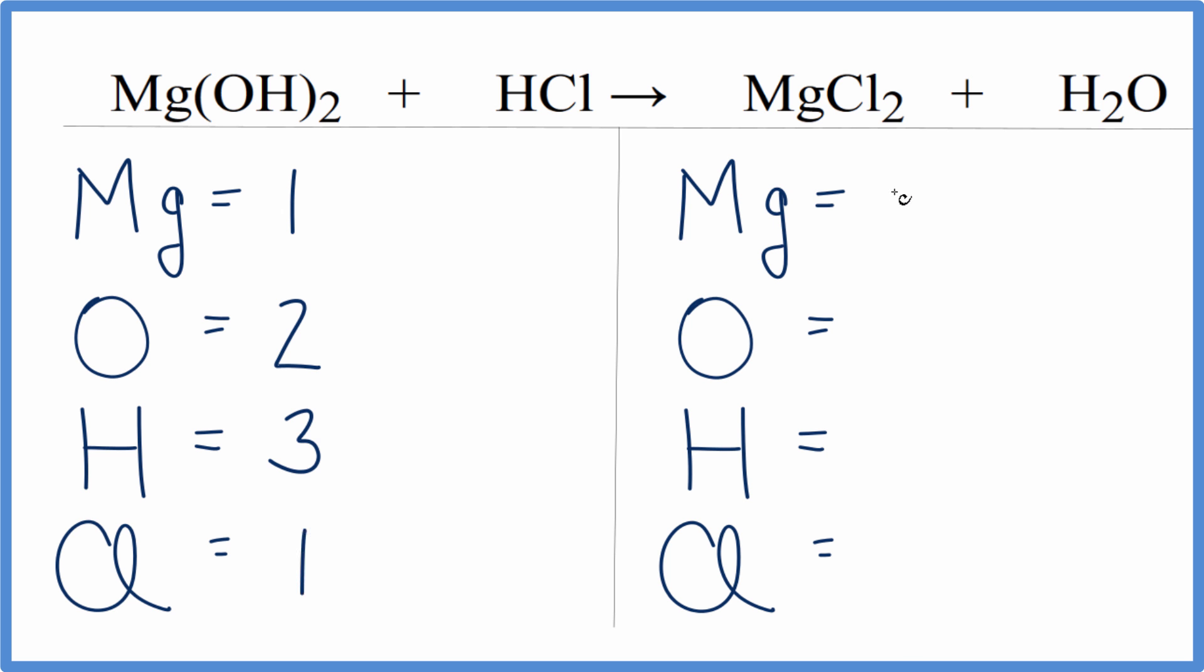On the product side, we have 1 magnesium, 1 oxygen, 2 hydrogens, and 2 chlorine atoms. So there are quite a few things that aren't balanced here.